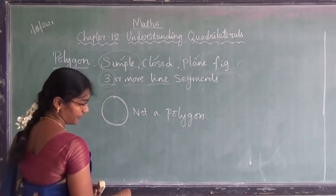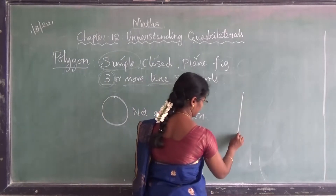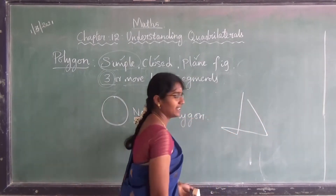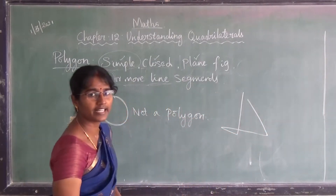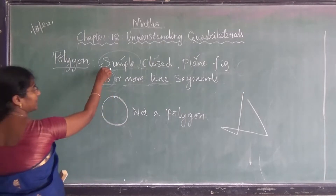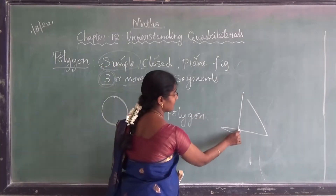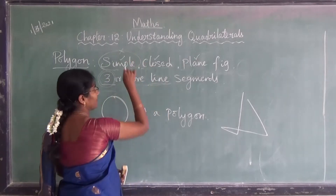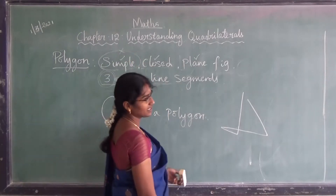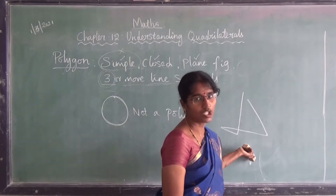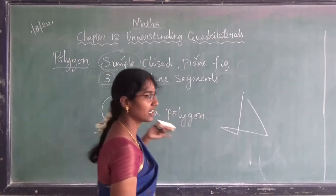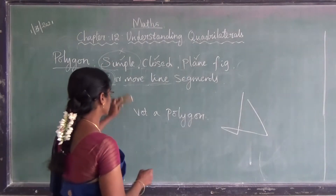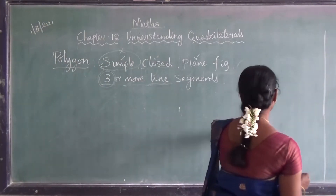Now I will draw one more figure. Can I say this is a polygon? The first condition is 'simple.' Here it crosses the other line segments, so it is not simple. From the first condition itself we can say it is not a polygon, because polygon means it must be a simple figure — it doesn't cross the other line segments.